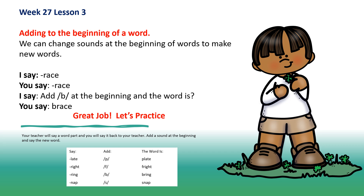Nice job. Now let's add to the beginning of a word. We can change sounds at the beginning of words to make new words. Say race — add B at the beginning, and the word is brace. Very good. Let's practice. Say late — add P to the beginning, and the word is plate. Say ring — add S to the beginning. Say nap — add S to the beginning, and the word is snap. Excellent.